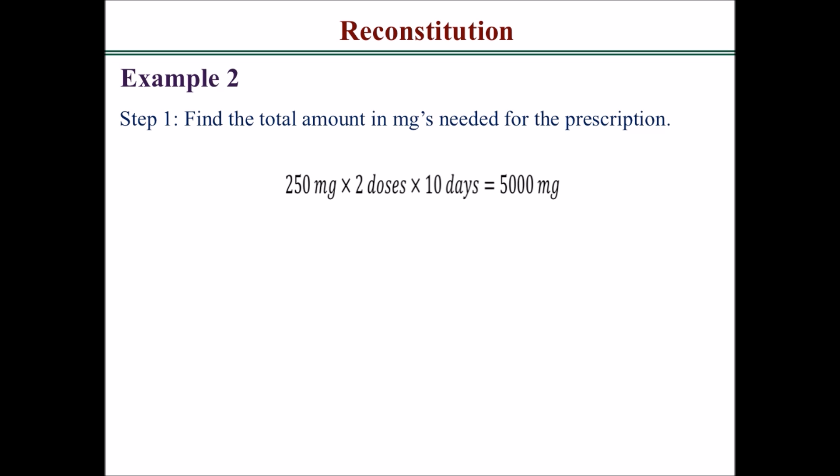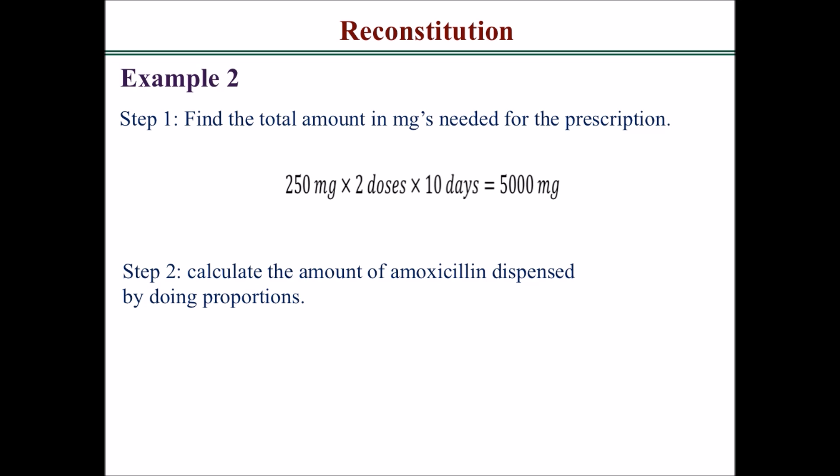That is 250 milligrams times two doses, because it was BID, times 10 days, giving 5,000 milligrams total. Step two: calculate the amount of amoxicillin dispensed using proportions. The concentration is 125 milligrams per 5 ml, and you want to find how many milligrams are in 120 ml. You get 3,000 milligrams.